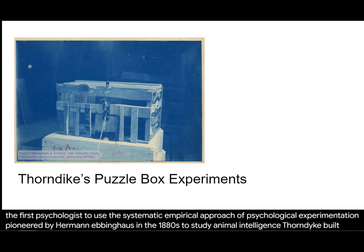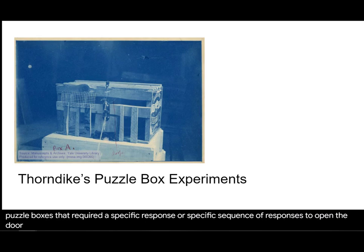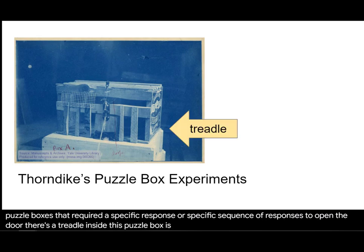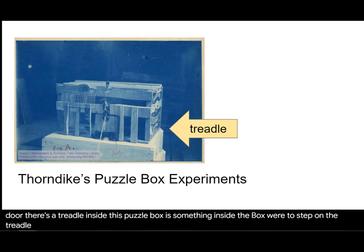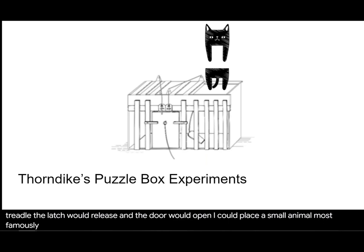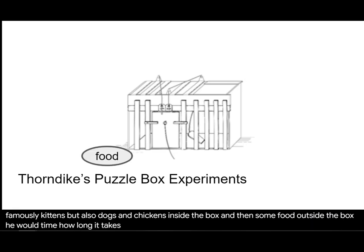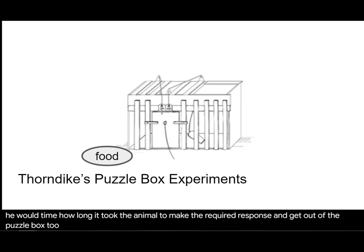Thorndike built puzzle boxes that required a specific response or specific sequence of responses to open the door to the box. For example, there's a treadle inside this puzzle box. If something inside the box were to step on the treadle, the latch would release and the door would open. Thorndike would place a small animal — most famously kittens, but also dogs and chickens — inside the box and then some food outside the box. He would time how long it took the animal to make the required response and get out of the puzzle box to receive its food.